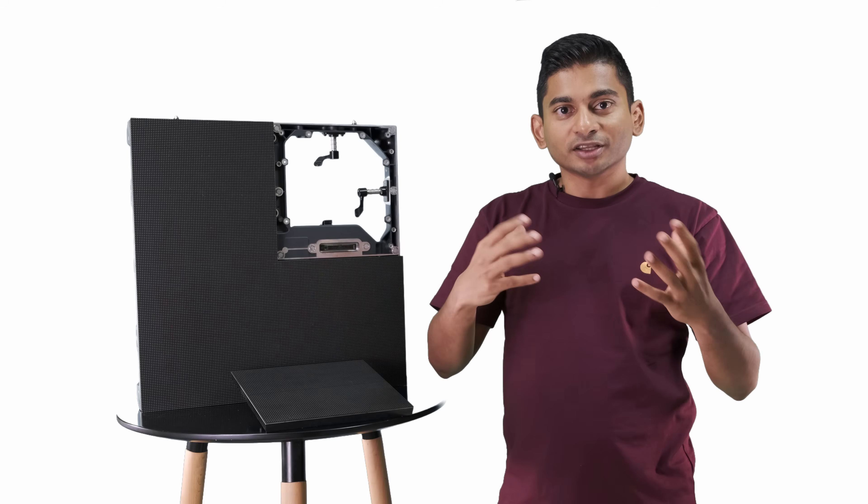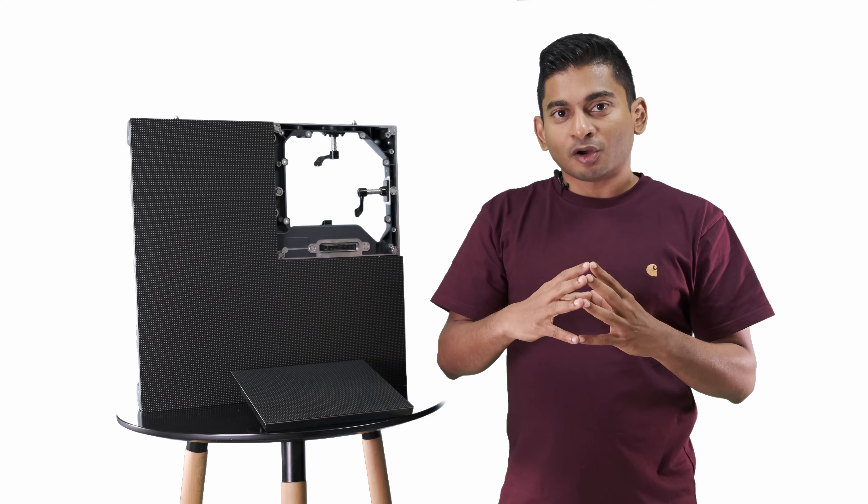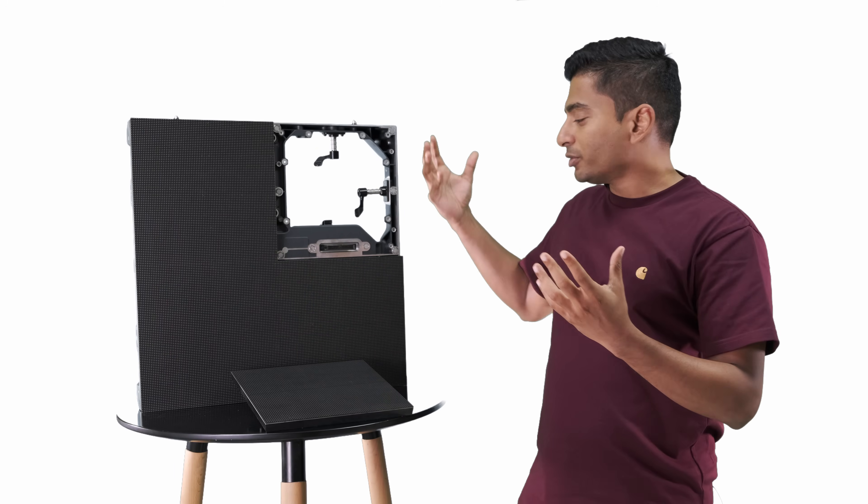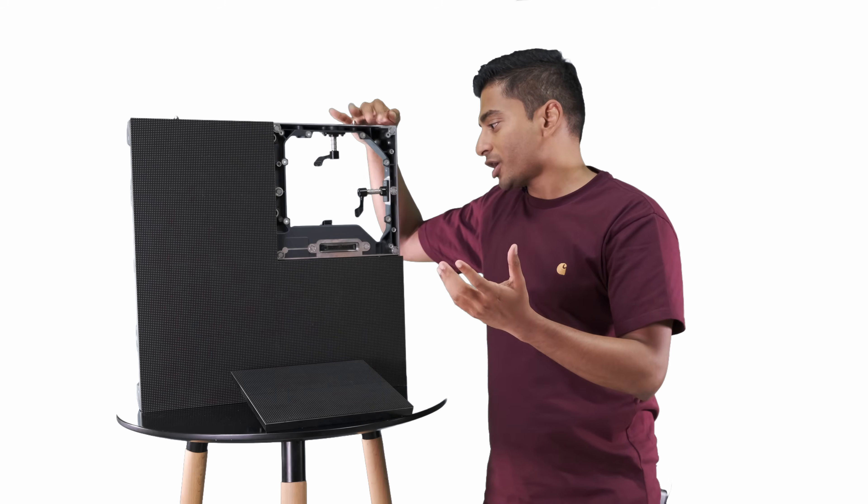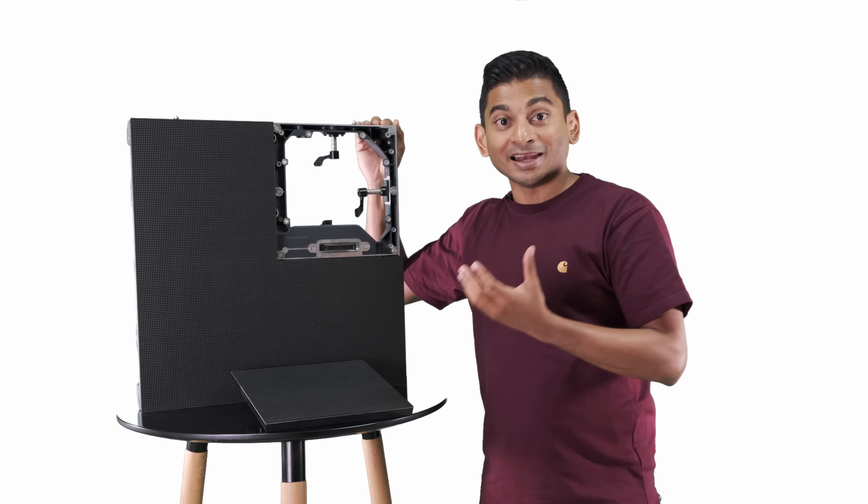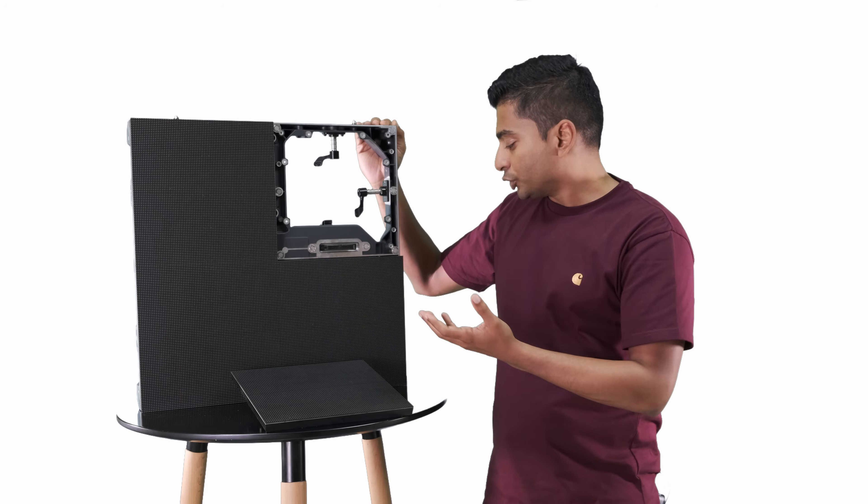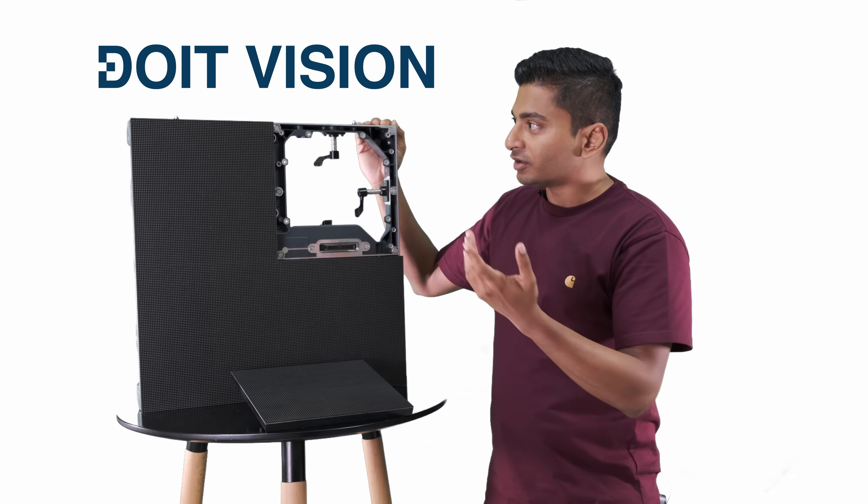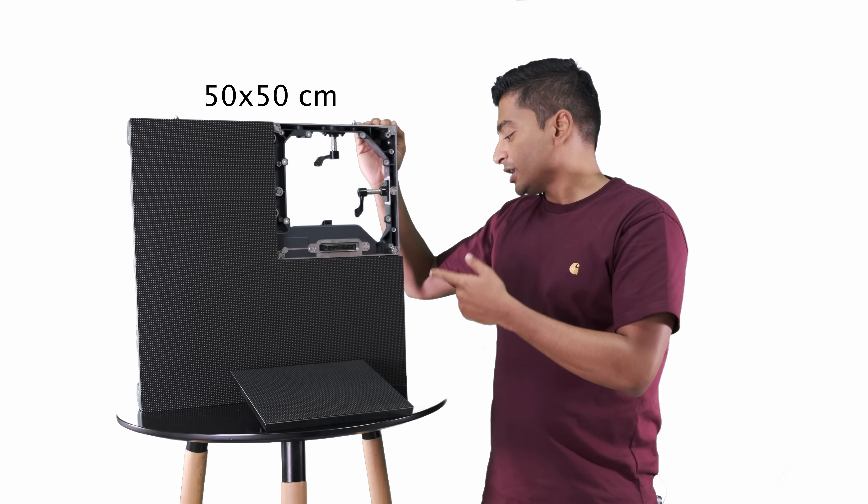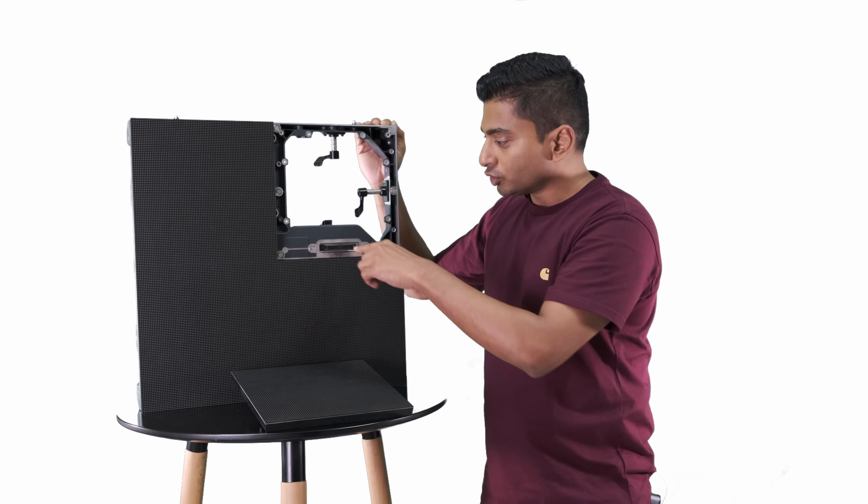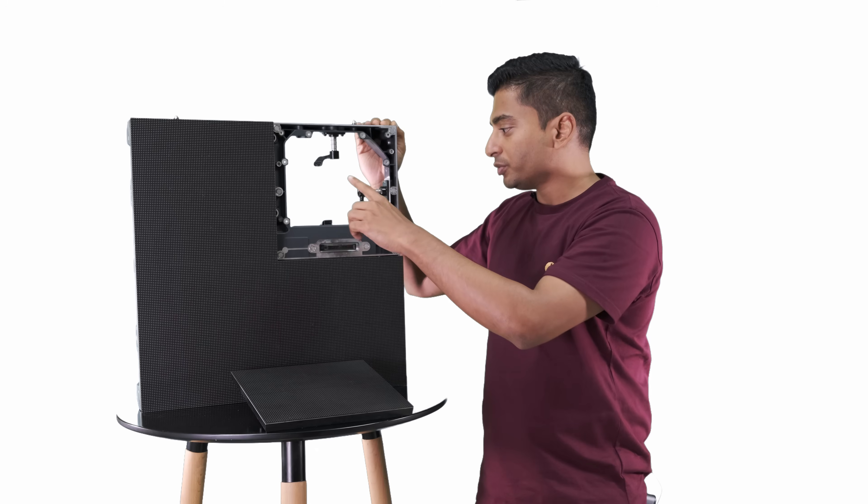Before I start explaining what is a pixel pitch, first you have to see what is the primary component in an LED screen. This is one of the primary components called an LED cabinet. This is our Doit LED cabinet, 50 centimeters wide, 50 centimeters in length, having four modules which are 250 millimeters by 250 millimeters.